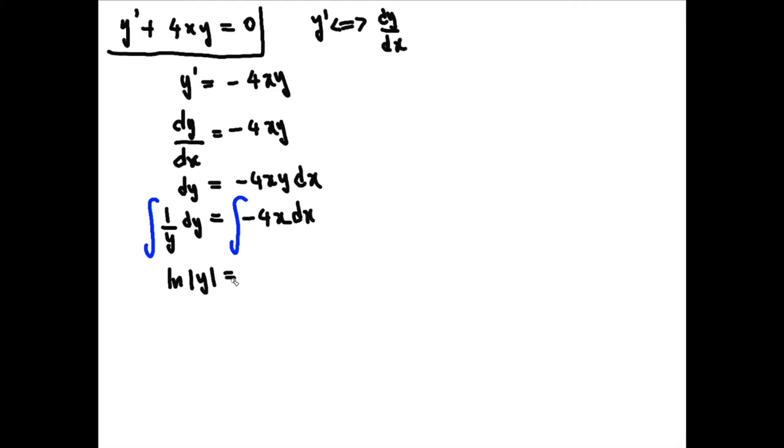Which equals minus, well I'm going to write this up here, minus 4 times the integral of x dx. That's the rule of the integral. If you have a constant, you can just pull the constant out of the integral, do the integral itself, and then multiply it back in. So it's just minus 4 times the antiderivative of x, which is x squared over 2.